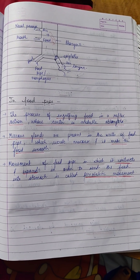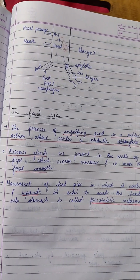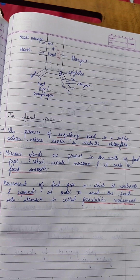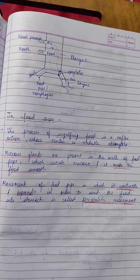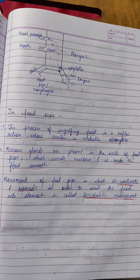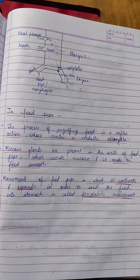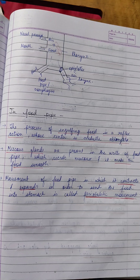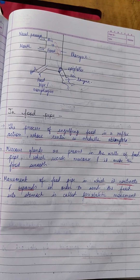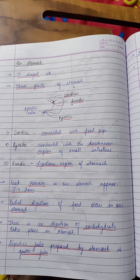In the food pipe, the process of engulfing takes place with the help of mucus, and it moves the food into the stomach with the help of peristaltic movement, making the food smooth. Mucus glands help in the movement of food into the stomach, and it is regulated by the medulla oblongata. The food pipe is also known as the esophagus.